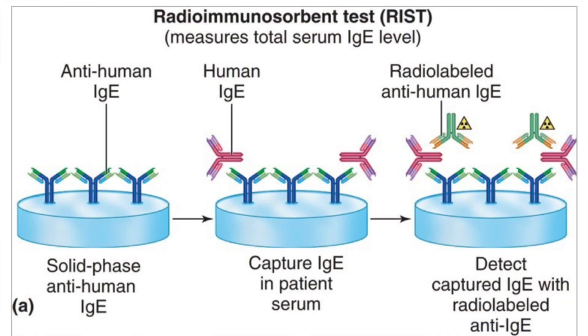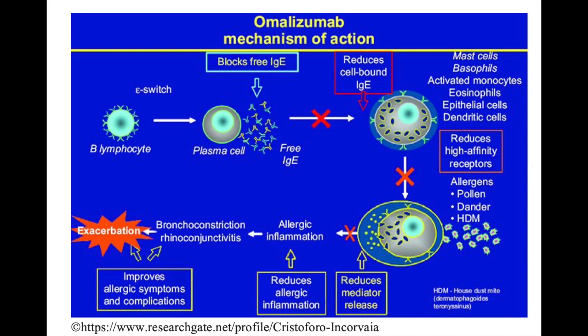Total IgE levels are neither specific nor sensitive for diagnosing allergy. Patients with parasitic infections, immunodeficiencies like AIDS, hyper-IgE syndromes, Epstein-Barr virus infection, and rheumatological conditions may also have a raised total IgE level and therefore test false positive for allergy. Also, normal IgE levels do not rule out allergy. The only role of total IgE levels from the point of view of allergy is while administering anti-IgE monoclonal antibody which is omalizumab — total IgE level is used for dose calculation and to assess the response later on.